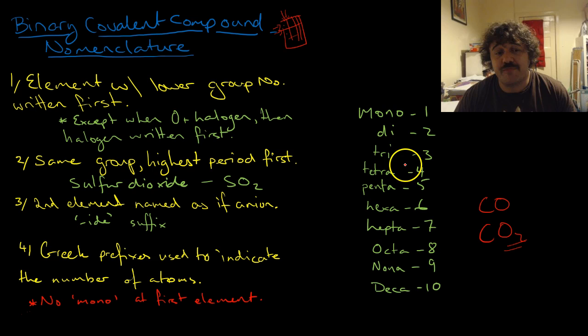So the Greek prefixes go such as this. So if you've got one atom, it's mono, two is di, three tri, four tetra, penta, hexa, hepta, octa, nona, deca. And that's it. I hope that made a lot of sense. If you have any questions, put them in the comments below, and we'll see you next time.